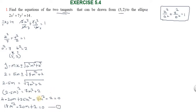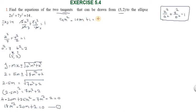Dividing through by 2: 9m² - 10m + 1 = 0.